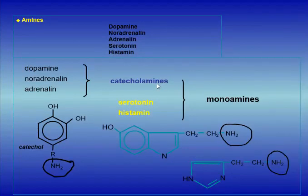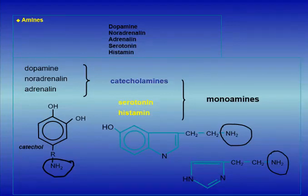What are the monoamines? Monoamines are dopamine, noradrenaline, adrenaline, serotonin, and histamine. Dopamine, noradrenaline, and adrenaline have the same precursor and are called catecholamines.